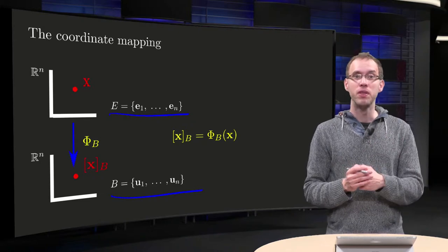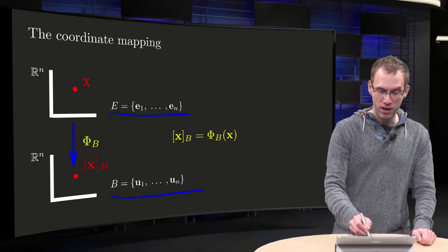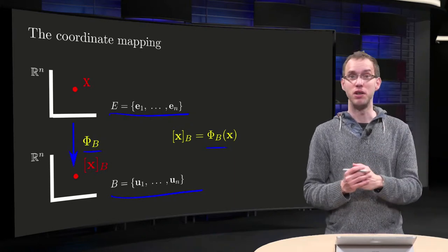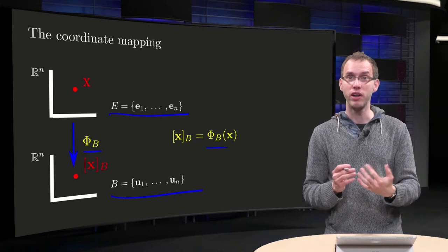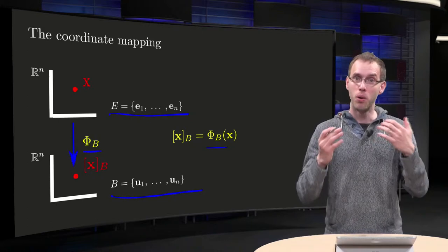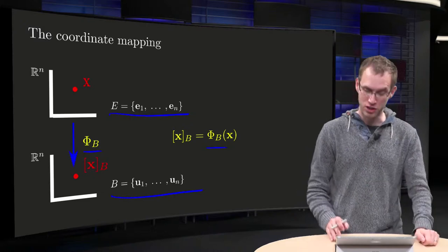Then we know that we have a mapping phi. Phi maps x to its coordinate vector xB, so this is a linear mapping from Rn to Rn, so it is implemented by some matrix, but by which matrix? Well, let's see.